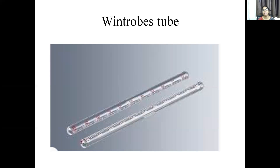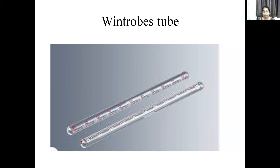Next is the Wintrobe tube. This is an 11 cm long tube with one end closed and one end open. The internal bore diameter is 2.5 mm and calibrations range from 0 to 10. The Wintrobe tube can be used for measuring both PCV and ESR. For ESR, you fill the tube with anticoagulated blood up to 0 at the top, place it vertically in a stand, and note the reading after one hour — that reading is the ESR.